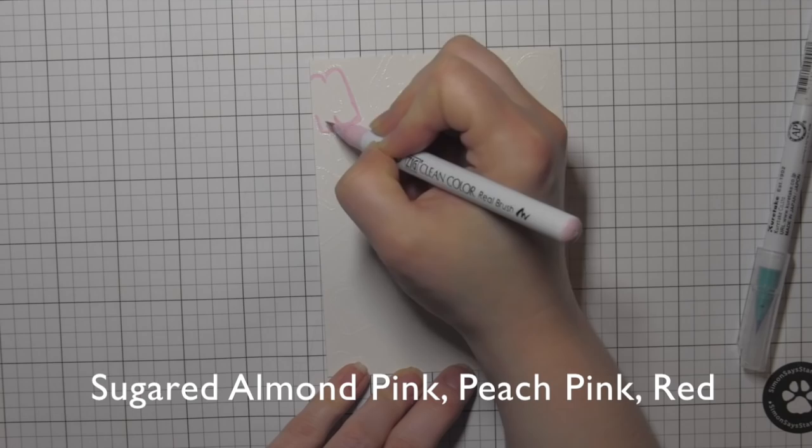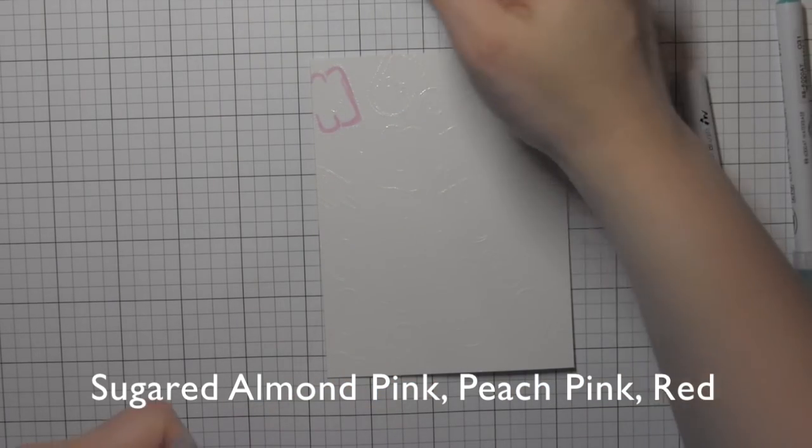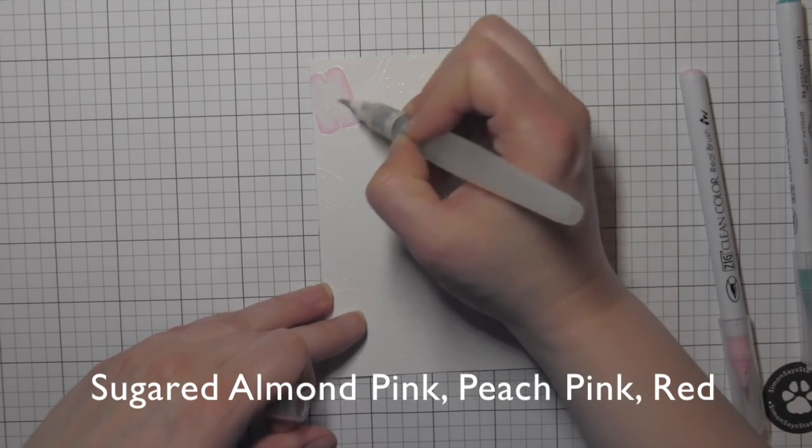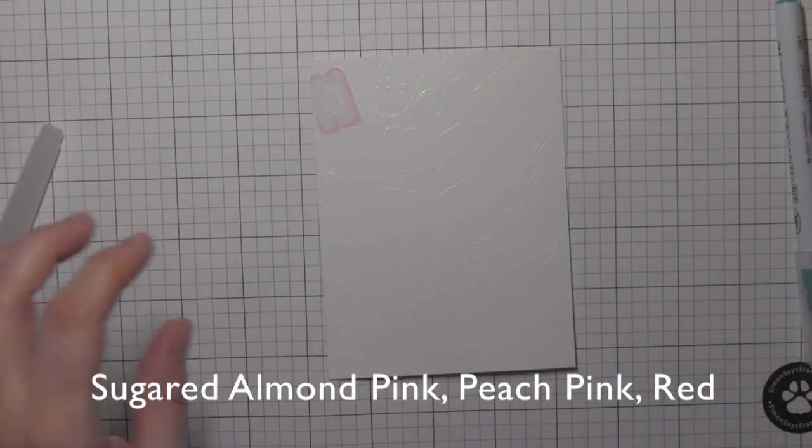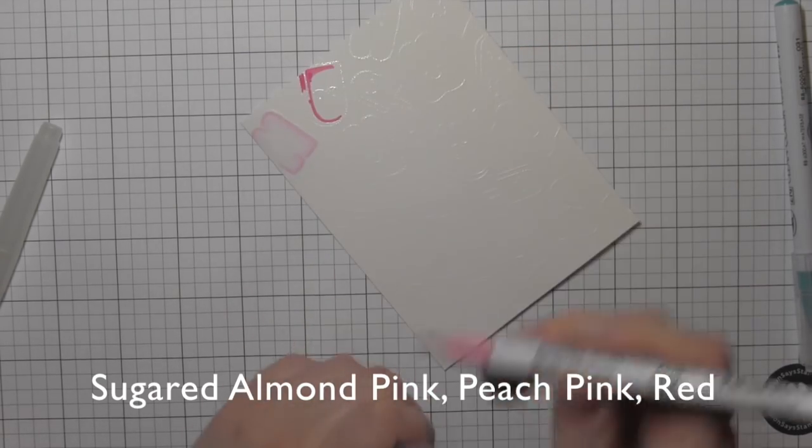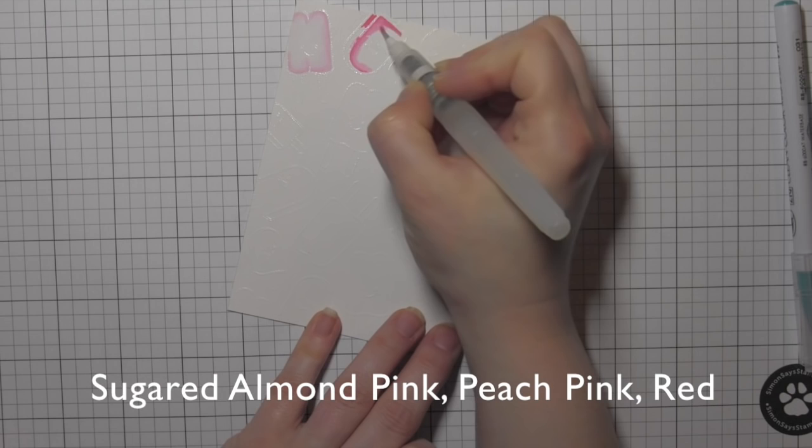I'm going to take the Zig Clean Color Real Brush markers and I'm just going to go around the outline of the shape with the markers. I'm kind of doing this in rainbow color, but I'm going to lay down the color with the marker just around the edge.